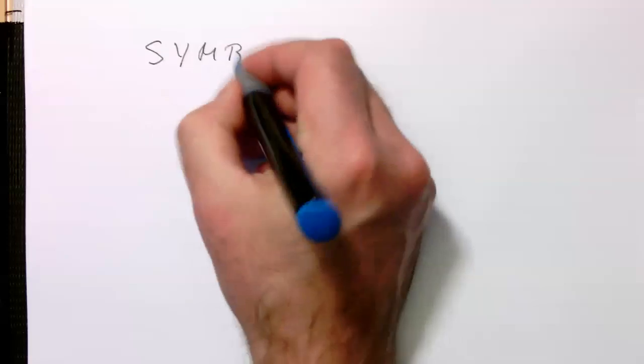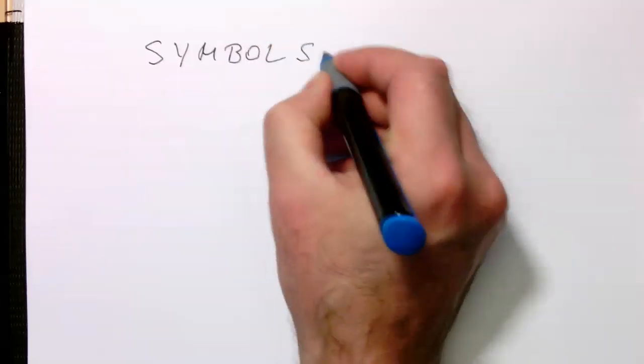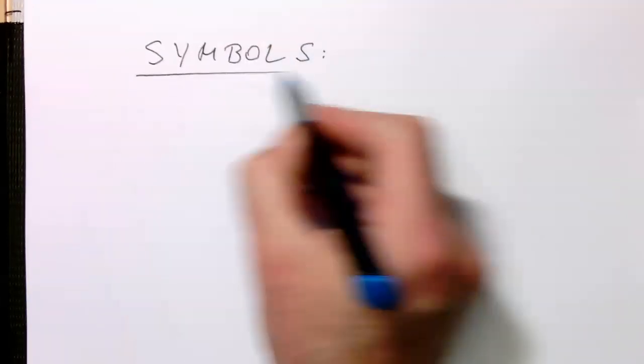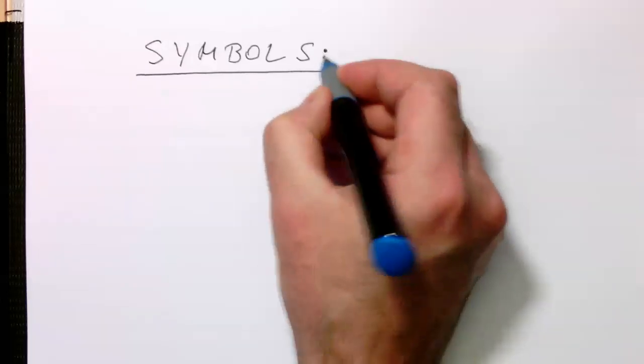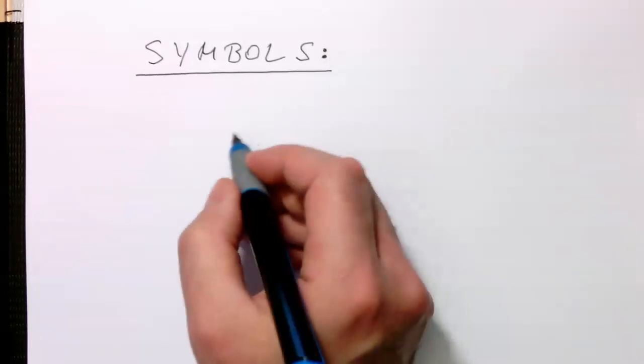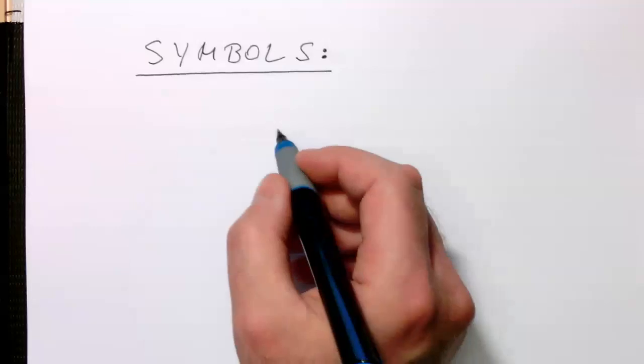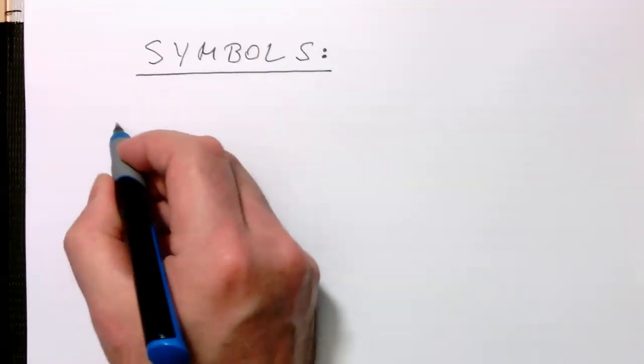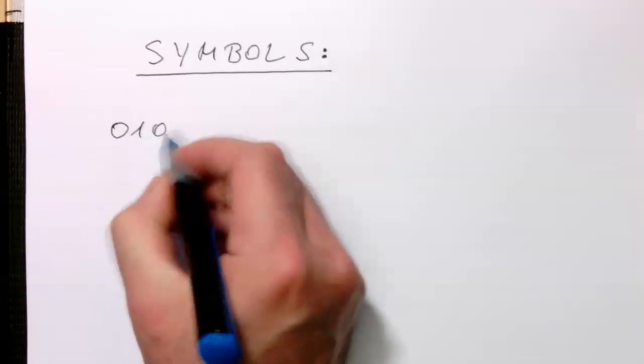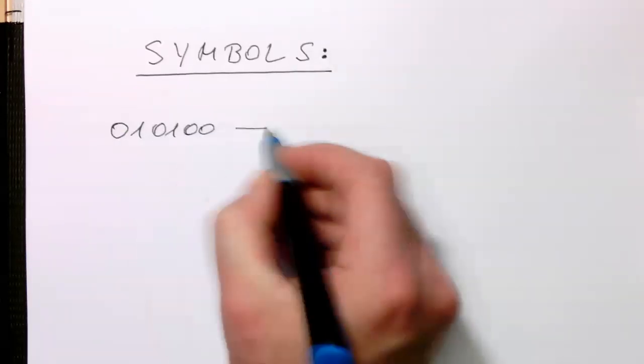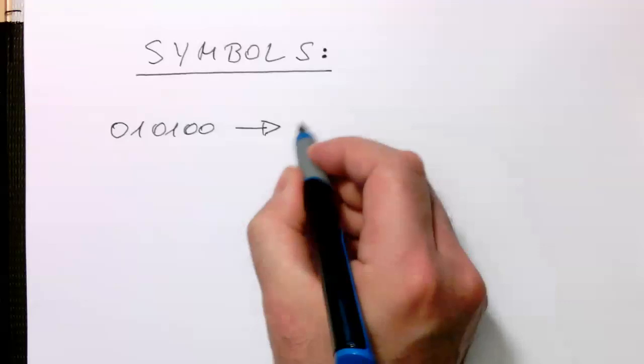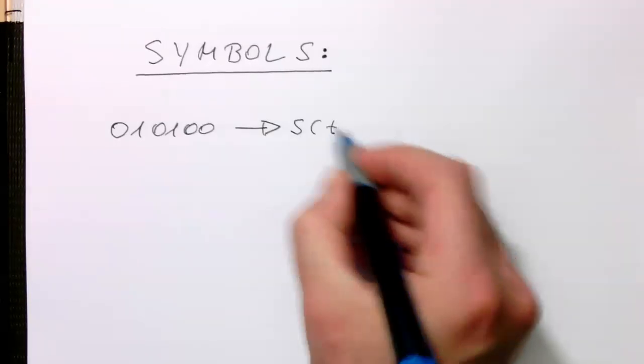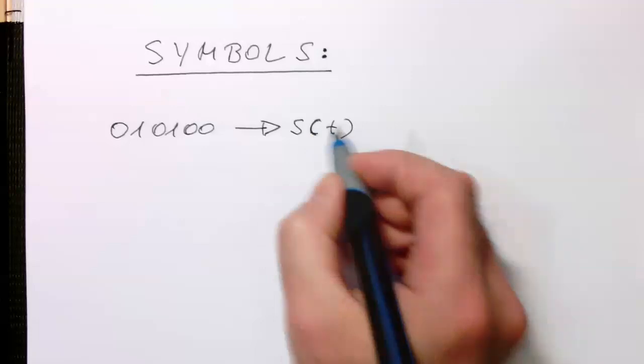So now we need to talk in depth about symbols. I've introduced them at the very beginning, but only very hand-waving, so now we need to fix that. Remember symbols appear here when we are converting our digital data stream into an analog signal we can transmit.